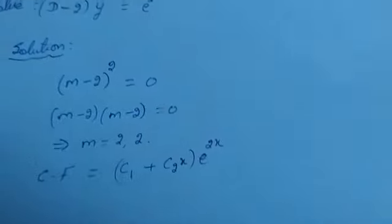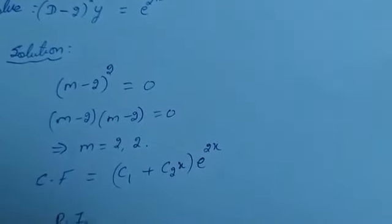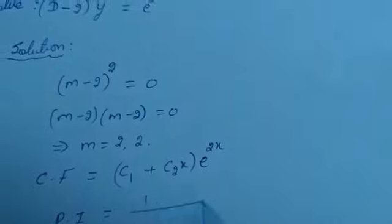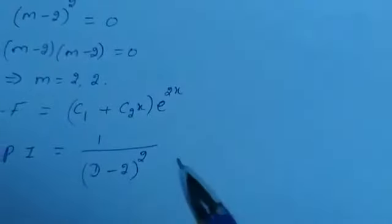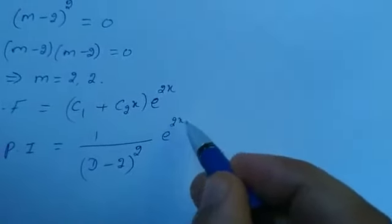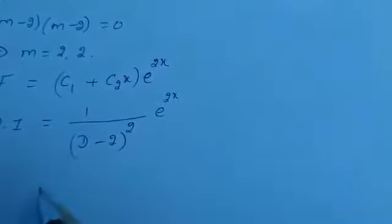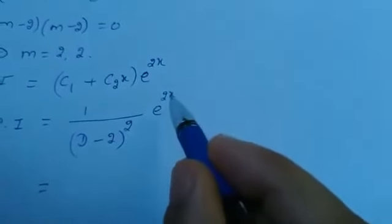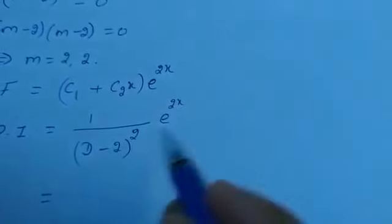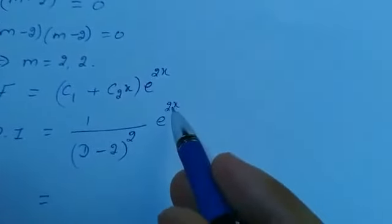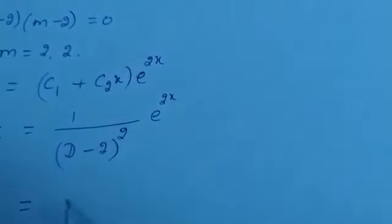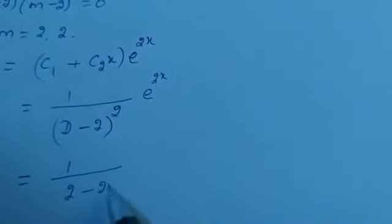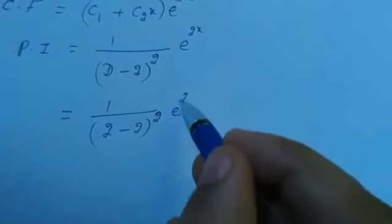Then we can go to the particular integral. The particular integral is equal to 1 by (D minus 2) whole square, into the right hand side e raised to 2x. Here, the right hand side is e raised to 2x, so in the place of D, we replace with the coefficient of x, which is 2. So we get 1 by (2 minus 2) whole square into e raised to 2x.